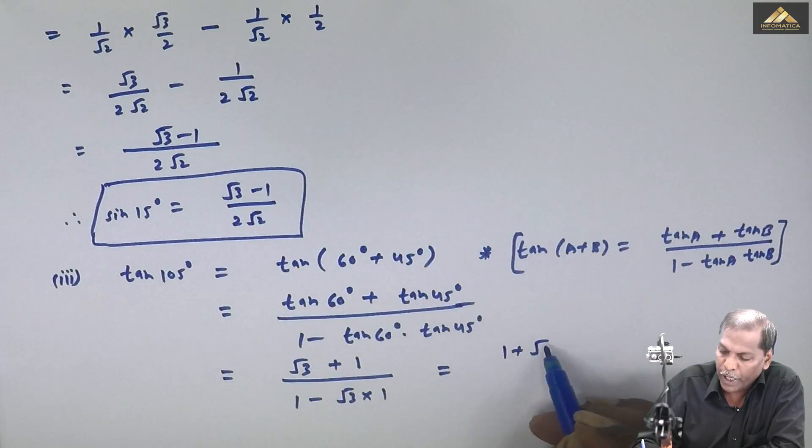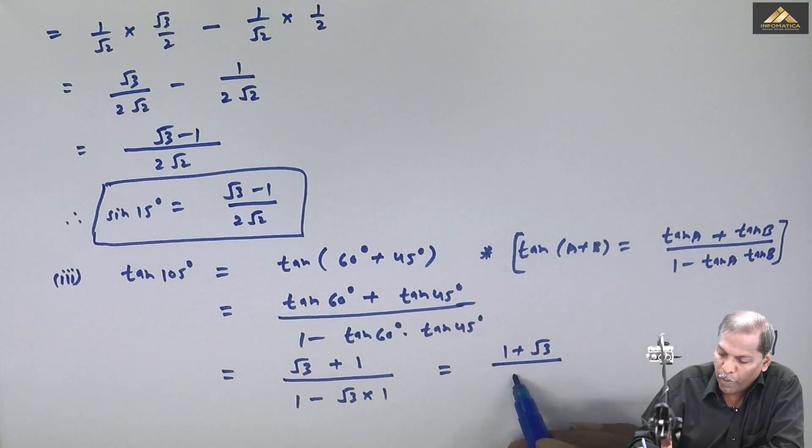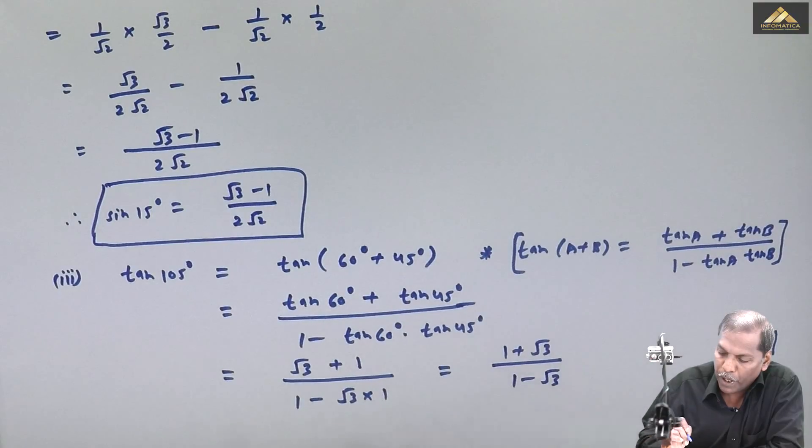The answer we get is, in the numerator, 1 plus root 3 upon, in the denominator, 1 minus root 3, at least 1.